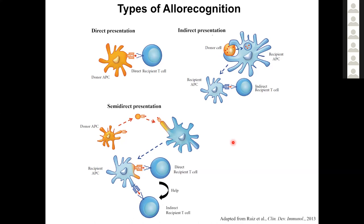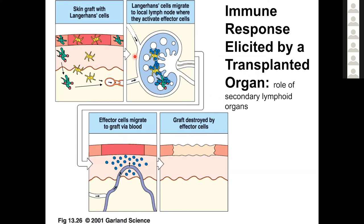This T-cell activation happens in the secondary lymphoid organs draining the transplanted organ. For skin grafts, that means draining lymph nodes; for vascularized organs, it's the spleen, since lymphatics are cut at transplantation. Donor and recipient antigen presenting cells migrate to these secondary lymphoid organs, presenting donor antigens and activating T-cells, which then proliferate, differentiate into effector cells, migrate out, circulate, find the graft, and destroy it.